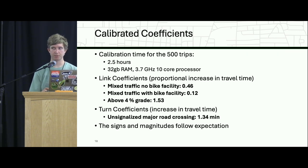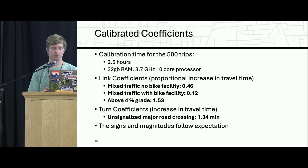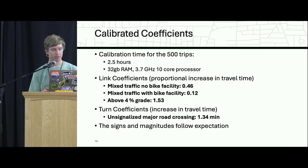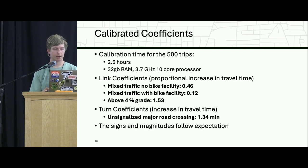Once we completed the calibration process — which was computationally intensive and took about two and a half hours — our outputted link coefficients were: mixed traffic with no bike facility, 0.46; with bike facility, 0.12; and above 4% grade, 1.53. The magnitudes of no bike facility versus with bike facility check out — we'd expect no bike facility to be higher. The above-4% grade coefficient indicates people are trying to avoid steep roads. For our turn coefficients, the unsignalized major road crossing impedance was 1.34 minutes, suggesting people are detouring to avoid these crossings and likely routing toward signalized intersections instead.